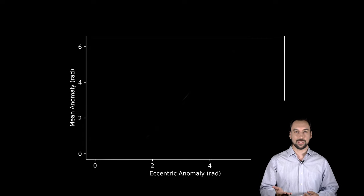To understand better this equation, we are going to take a look at the following chart. In the x-axis, we have the eccentric anomaly, and in the y-axis, we have the mean anomaly.